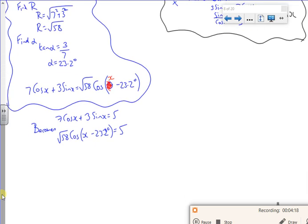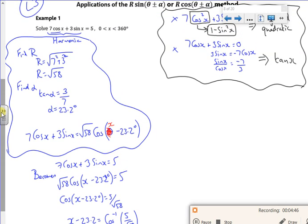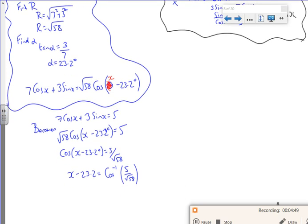Which means now I can just do some normal trig on it. So if I divide through by √58, so I've got 5 over √58. So you tell me what I'm solving between here. So from 0 to 360. So my calculator gives me 49 dead on.